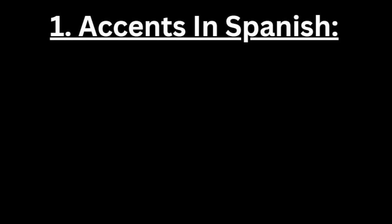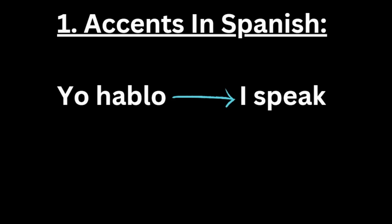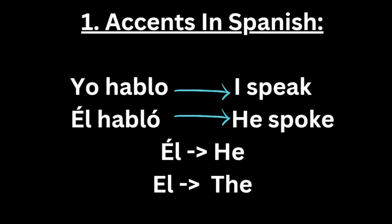Accents in Spanish help indicate which syllable of a word should be stressed when spoken aloud. They are placed above vowels, and you put the emphasis of the sound on that vowel. For example, 'yo hablo' means I speak. However, 'él habló' with an accent mark on él means he, whereas without the accent it means the masculine article 'the.' Also, H's in Spanish are not pronounced — so whenever you see a word beginning with H followed by a vowel, just say the vowel. It's not 'hablo' with an H sound, it's 'ablo.'